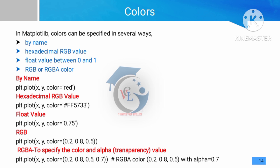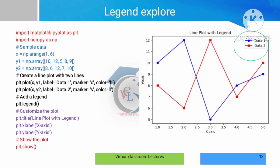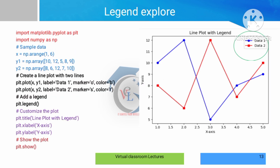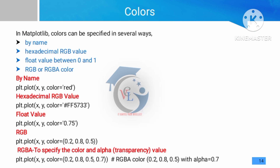The next topic is colors. In graphical representation, color is very important — for example, blue and red colors help us easily identify different datasets. Colors can be specified in multiple ways: by name, by hexadecimal values, by floating-point values, or by RGB values.